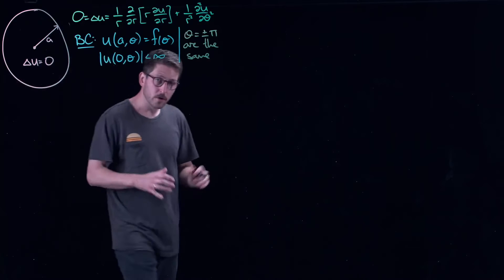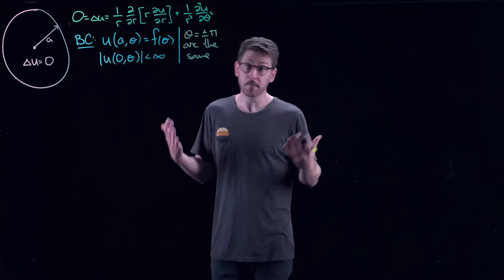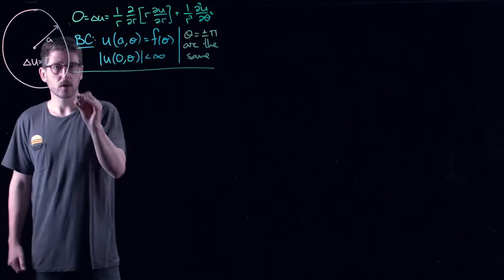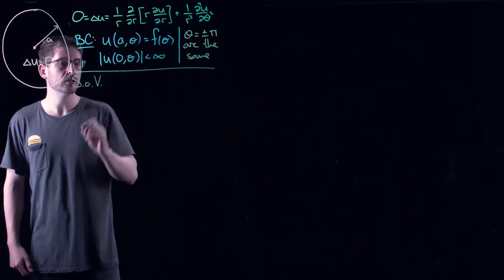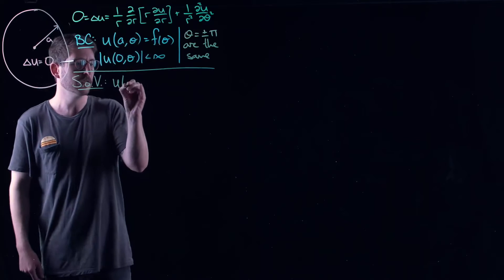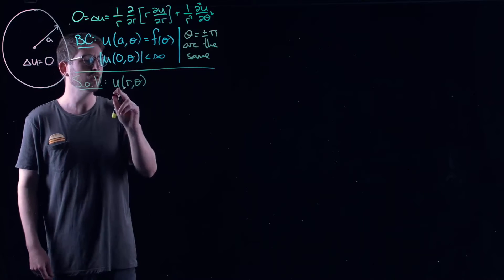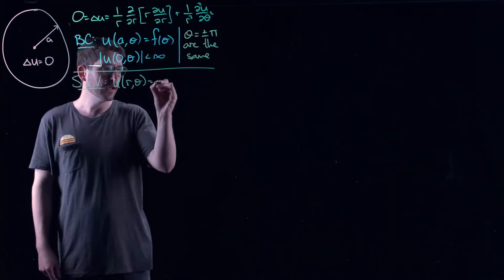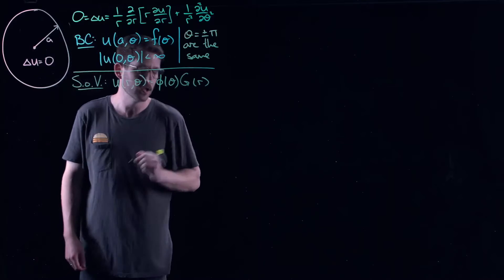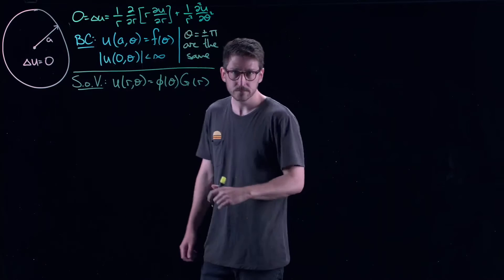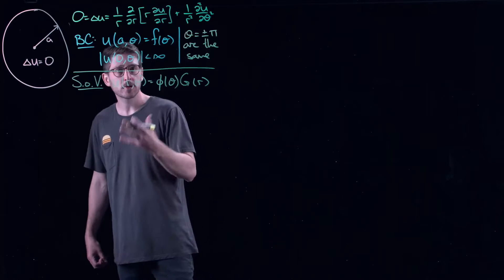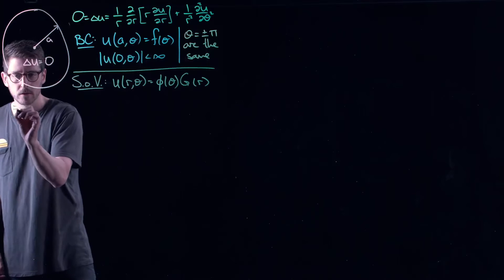Our weapon of choice going forward is separation of variables. So let's do separation of variables. My two variables are R and theta, so I'm going to assume that my unknown U as a function of R and theta is a function of theta — I'll call it phi of theta — times a function of R, which I'll call G of R. I've separated out the variables, and I'm going to give you what the PDE now looks like.